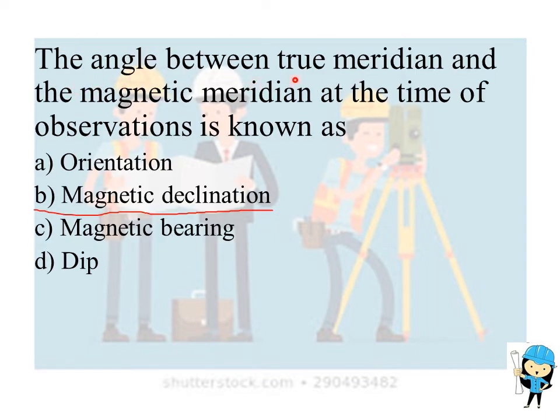The angle between the true meridian and the magnetic meridian at the time of observation is known as magnetic declination. If the magnetic meridian is to the right side of the true meridian, the declination is said to be positive. If it is to the left, then it will be negative.